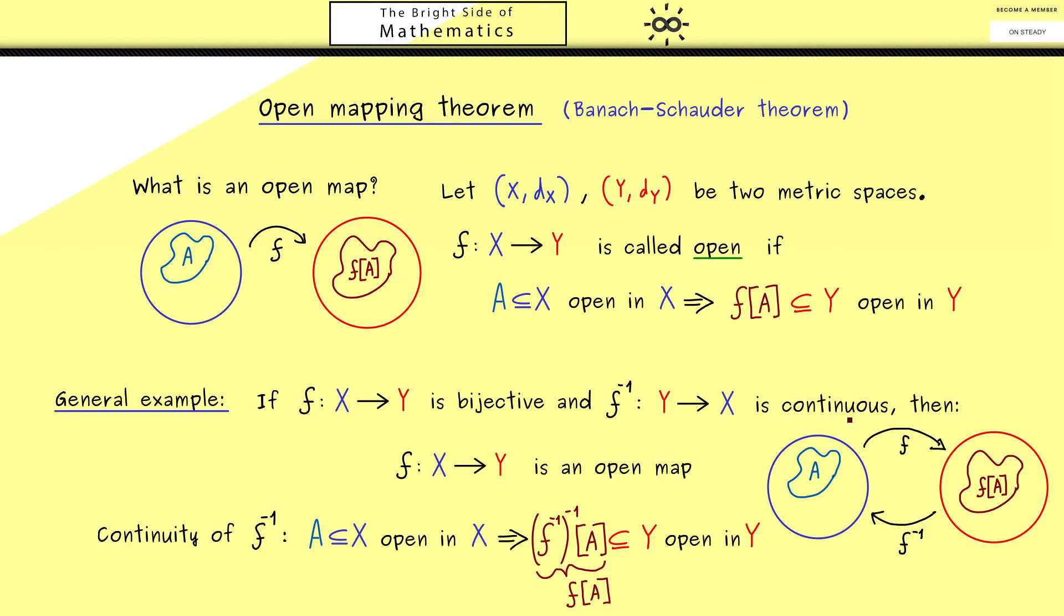Now with this example, you should see that the definition of an open map looks similar to the one of a continuous map. However, it's completely different because it goes the other way around.